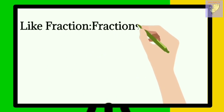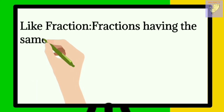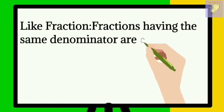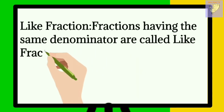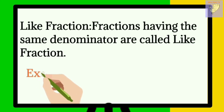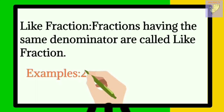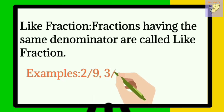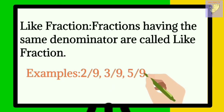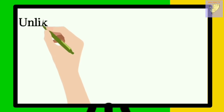The third type is like fraction. Fractions having the same denominator are called like fractions. For example: 2 upon 9, 3 upon 9, 5 upon 9, and 6 upon 9. In each case the denominator is 9, so the denominator is the same — therefore these are like fractions.